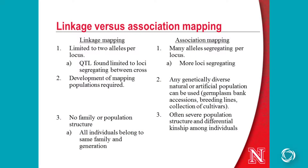Just to remind you, we have two ways to map QTL — linkage mapping and association mapping — and each has its pros and cons. With linkage mapping, we're using a biparental population and only looking at two alleles per locus. We have to develop the mapping population, which takes a long time. But the advantage is that we don't have any family or population structure that can confound results.